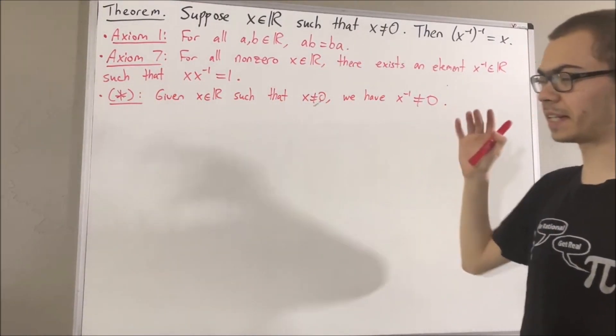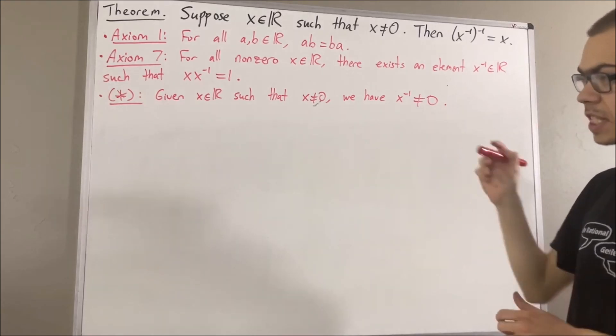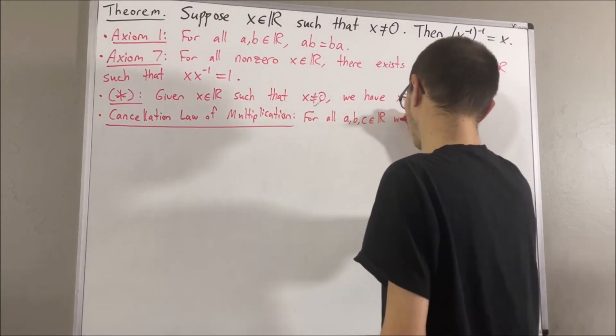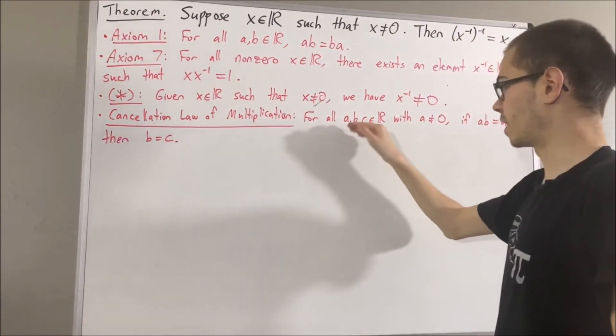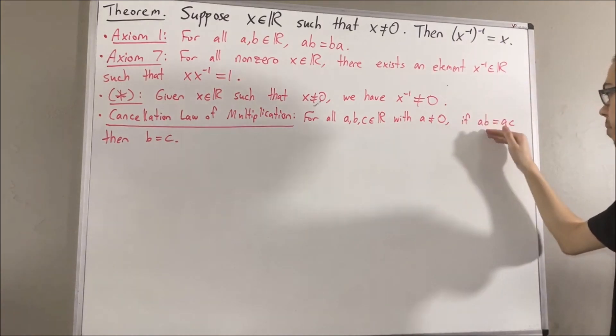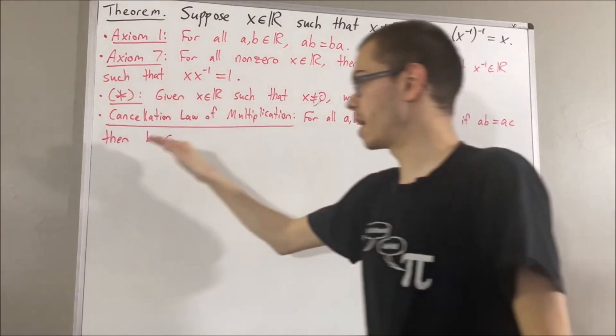Another property we've proven is the cancellation law of multiplication, which says the following. For all real numbers a, b, and c, with a not equal to 0, if a times b is equal to a times c, then b is equal to c.